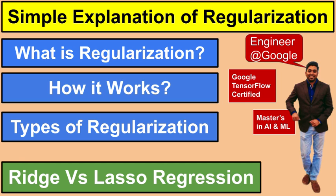Both Ridge and Lasso allow some bias to get a significant decrease in variance. We will also see the trade-off between bias and variance. In Lasso, some of the coefficients become exactly zero, resulting in model selection as well. This is a very important video to understand the whole concept of regularization, because overfitting is a very common problem in machine learning.